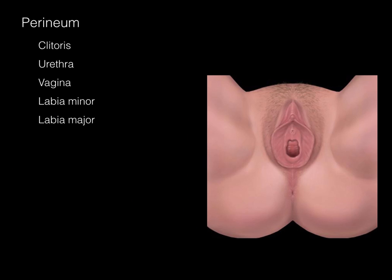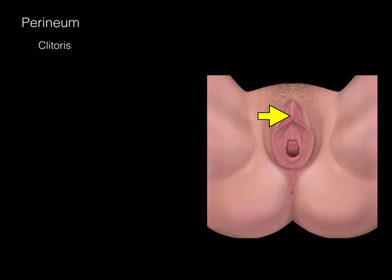In the perineum, there's the clitoris, urethra, vagina, and the two labia. The clitoris is the homologue of the glans penis and has the highest concentration of sensory neurons, making it the pleasure center for females during intercourse. The urethra is the external opening for the bladder; it is very short compared to the spongy urethra in males, making it more prone to infection.